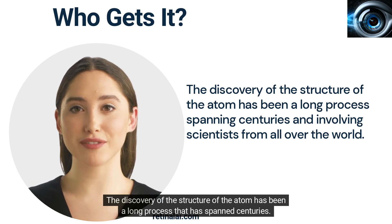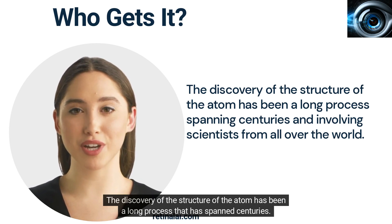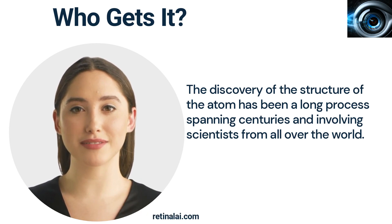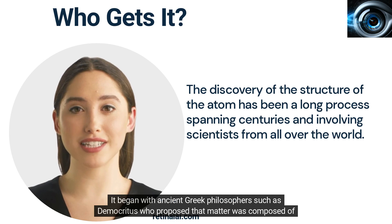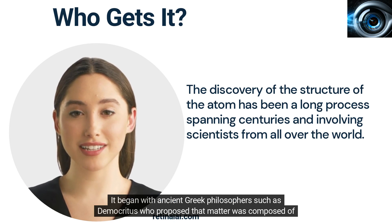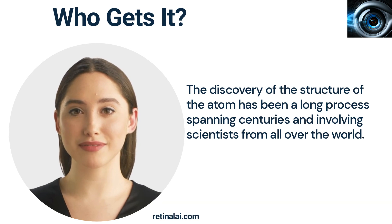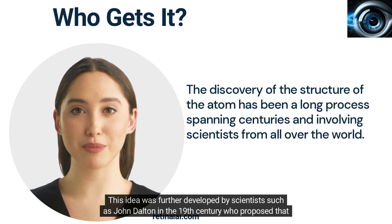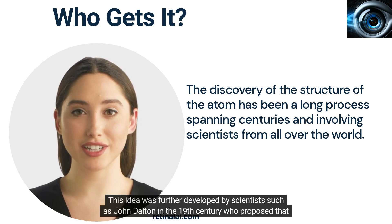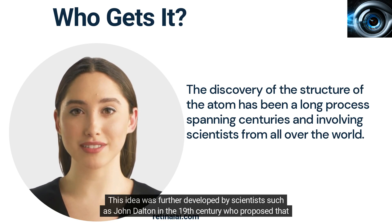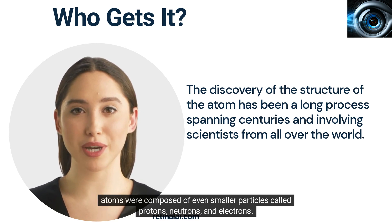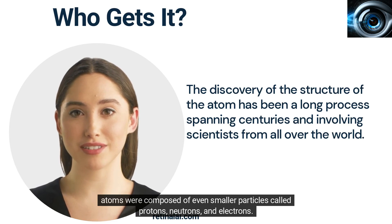The discovery of the structure of the atom has been a long process spanning centuries. It began with ancient Greek philosophers such as Democritus, who proposed that matter was composed of tiny indivisible particles called atoms. This idea was further developed by scientists such as John Dalton in the 19th century, who proposed that atoms were composed of even smaller particles called protons, neutrons, and electrons.